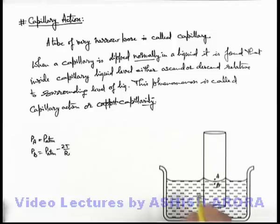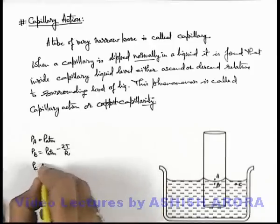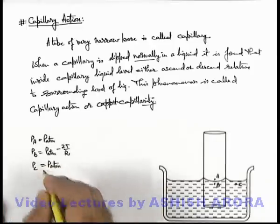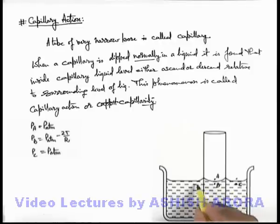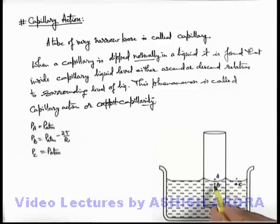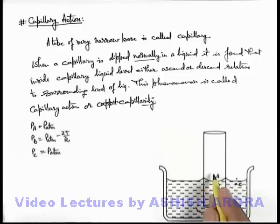If we take point C at the same level as point B but in the surrounding liquid, the pressure at point C will be P_atm, since the layer of liquid there is flat and must equal the pressure just outside the liquid layer. Now at a horizontal level, pressure must remain constant in the liquid. Since pressure at B is lower than at C, the liquid will be pushed into the capillary from the surrounding, and the liquid level will start rising upward.